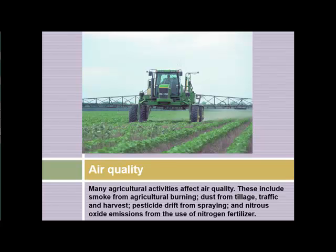Agricultural practices affect air quality through smoke from burning, dust from tillage, traffic and harvest, pesticide drift from spraying, and nitrous oxide emissions from nitrogen fertilizer use. To this list I would add feedlots — concentrated animal feeding operations. Thousands of cattle defecating on the ground, with that material getting stomped and blown around by air, create huge plumes of nitrogen drift. These nitrogen plumes from feedlot operations have increased the amount of nitrogen getting into streams and lakes across the Midwest.